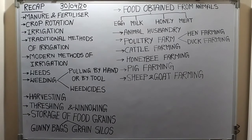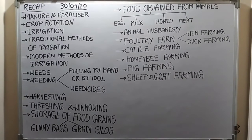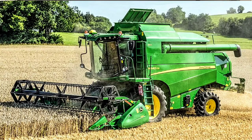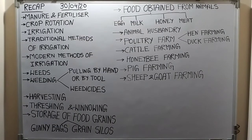The next activity done by the farmer is harvesting — it is the second last activity of our agricultural practices. Harvesting is done when the crops become mature. Harvesting means the cutting and gathering of the matured food crop. It is done with a tool called a sickle, or by a machine called a combine — from the front side of the machine the harvesting is done, and from the other side threshing is done.